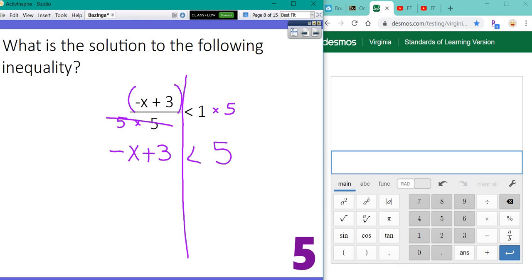Now, what's my next move here? Tell me. I'm going to subtract 3 on each side. That gives me negative x is less than 5 minus 3. Use decimals is 2.